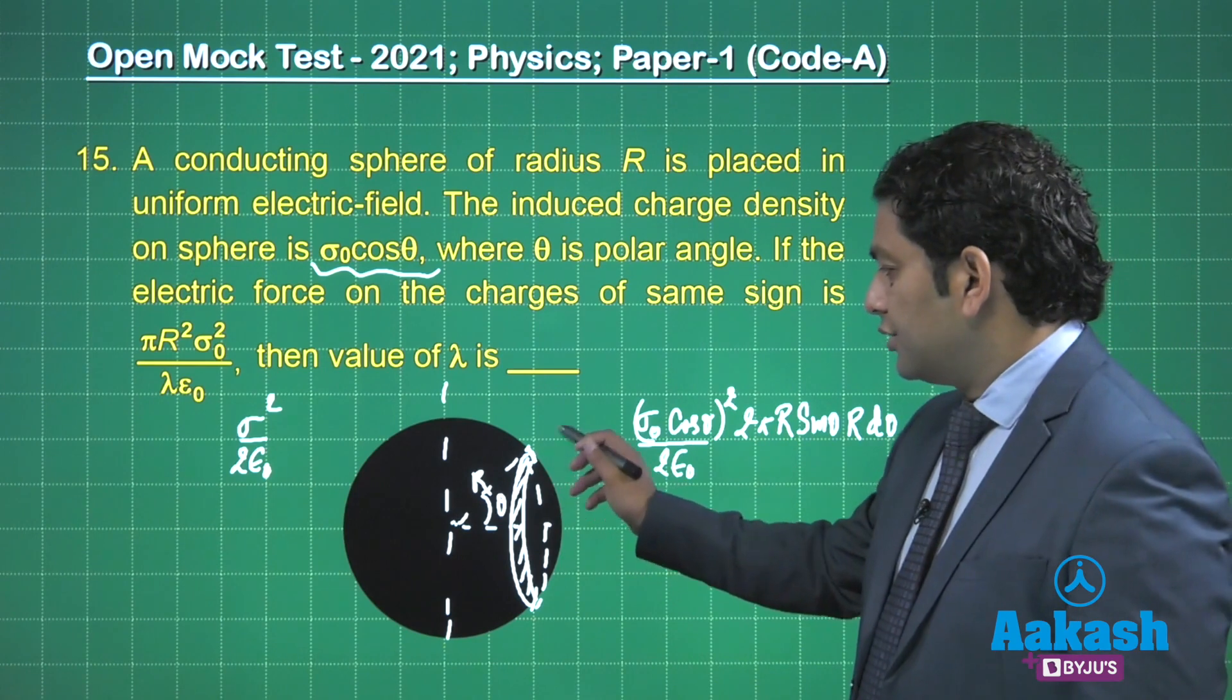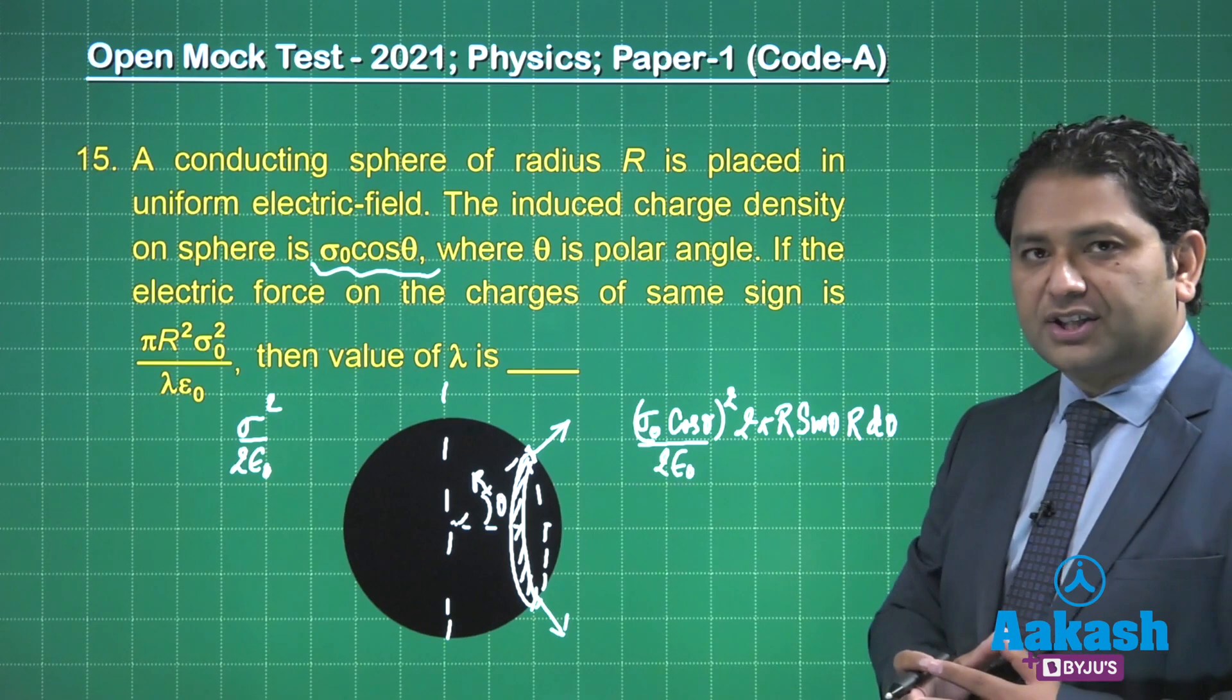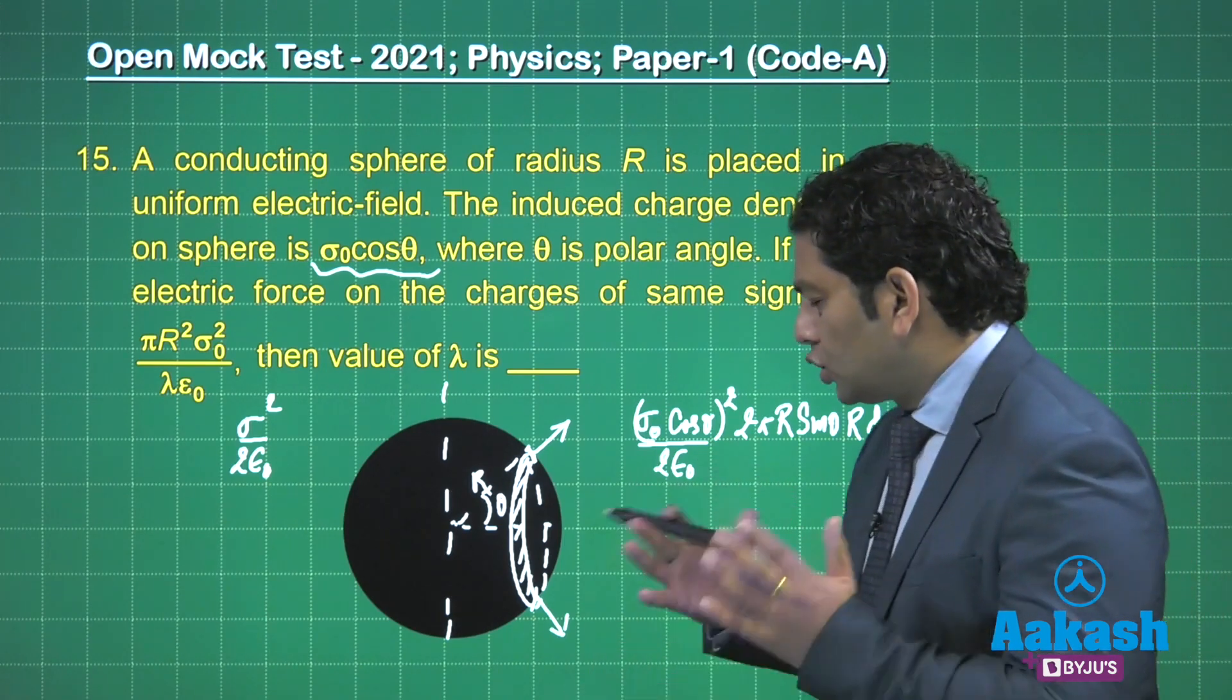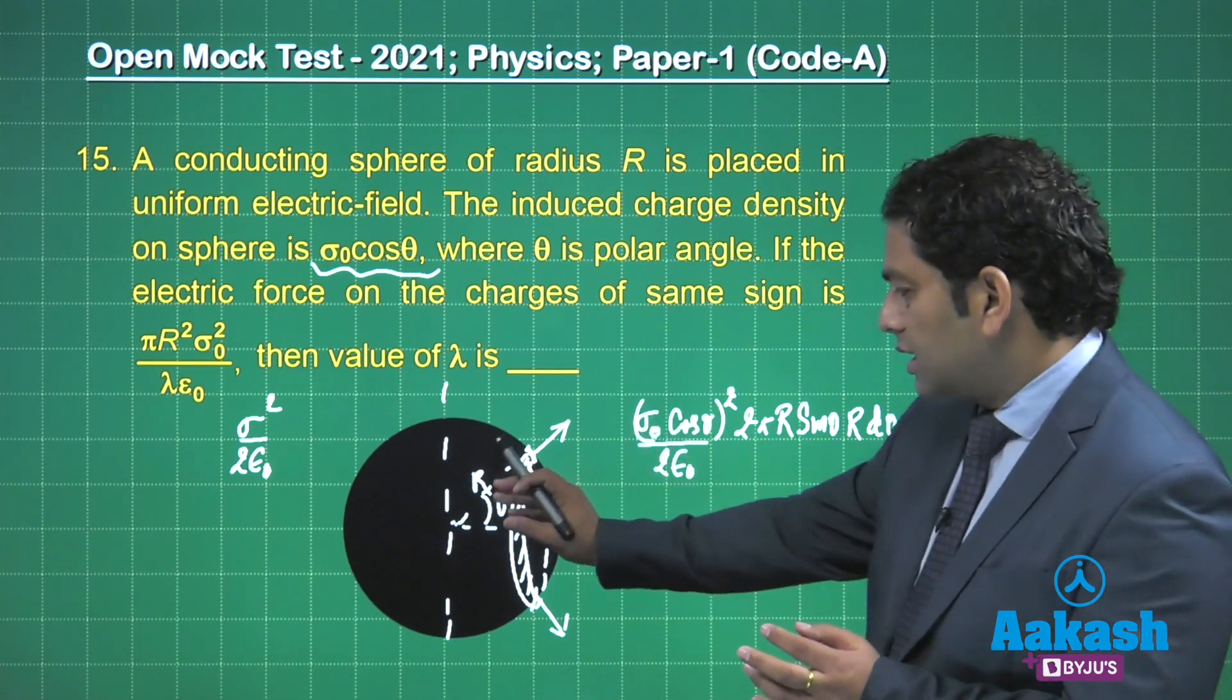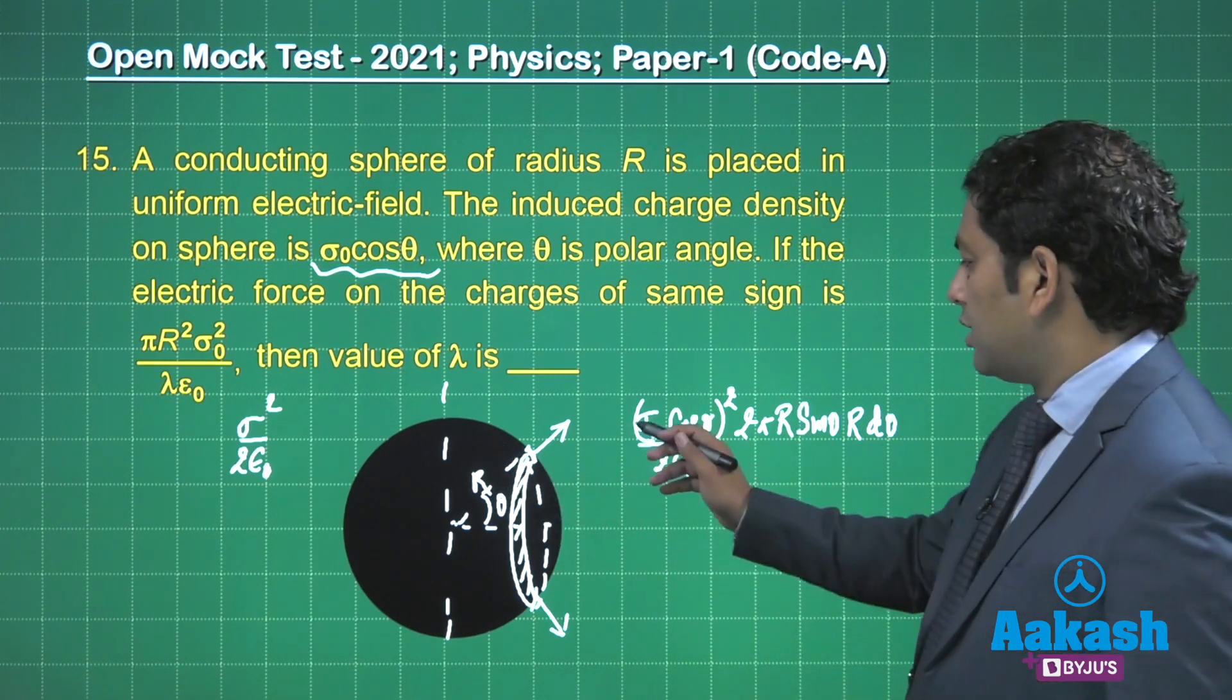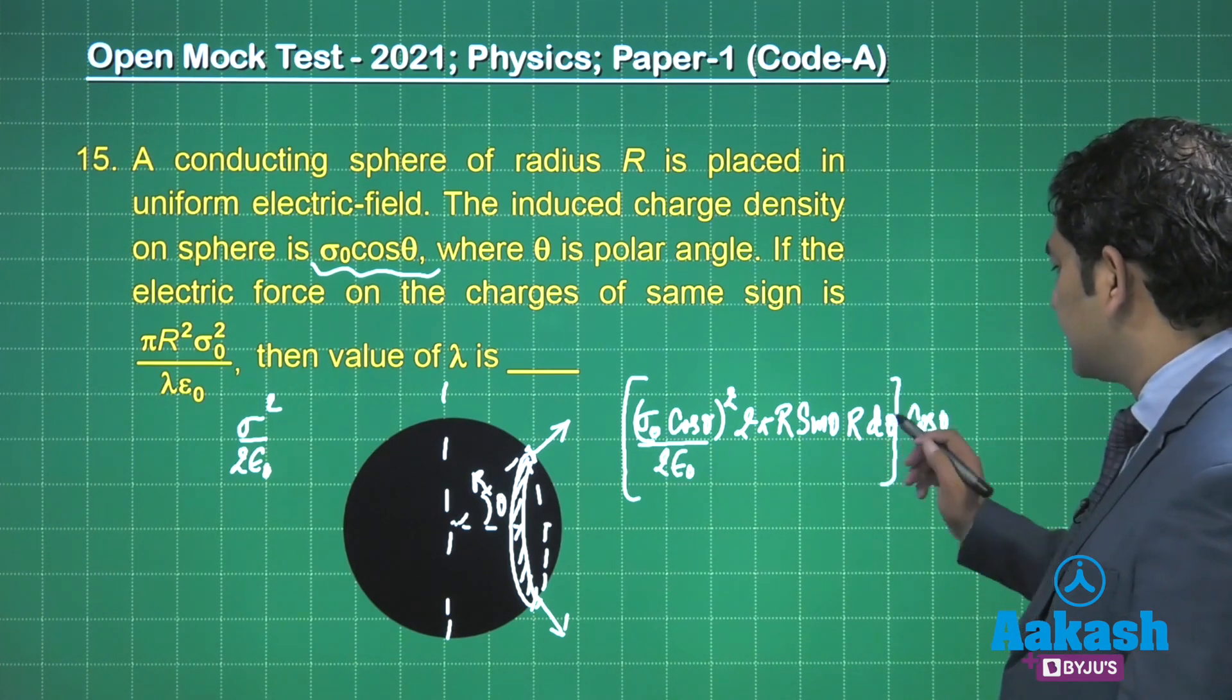If I want to calculate the total force exerted on the right hemisphere, you could see only a component of the force would be added. That component of the force therefore requires a cosθ component - just to show that this is the cos component which is getting added up.